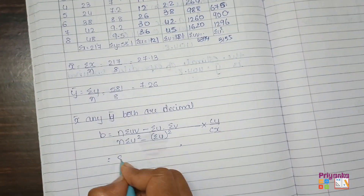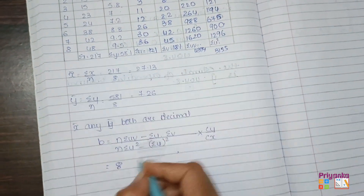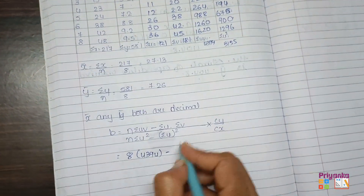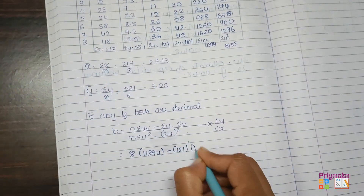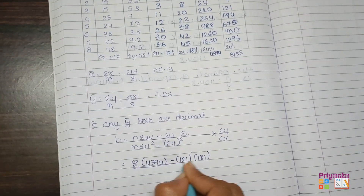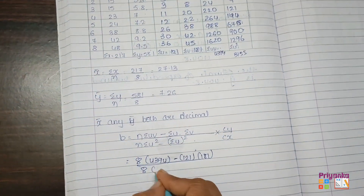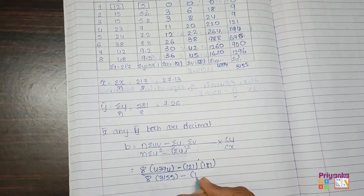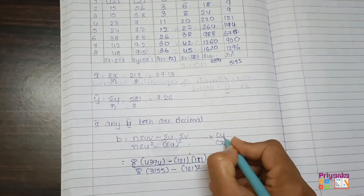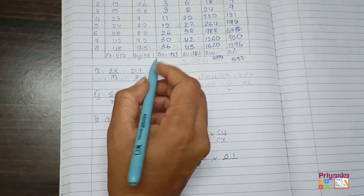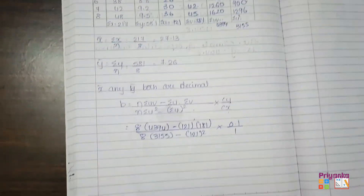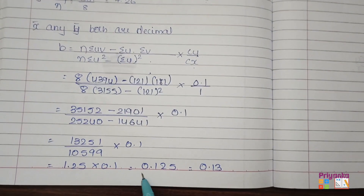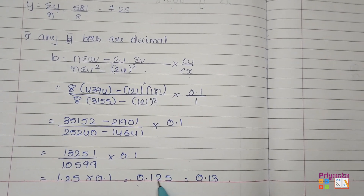Now plug everything into the formula. N is 8. Sigma UV is 4394, sigma U is 121, sigma V is 181, all divided by 8. Then sigma U² is 3155 minus sigma U that is 121 whole squared. CY was 0.1 and CX was 1. After completing the calculation, the answer we get for b is 0.125, which rounds to 0.13.